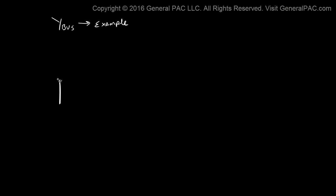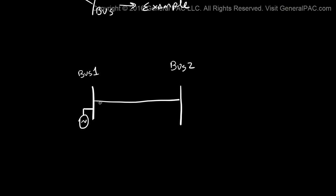Suppose that we have Bus 1, labeled right here. Bus 1 has some sort of generator connected to it, and there's a transmission line that connects Bus 1 to Bus 2. The transmission line that connects Bus 1 to Bus 2 has some sort of impedance to it, and impedance is modeled by Z.